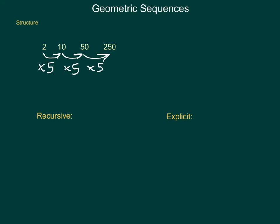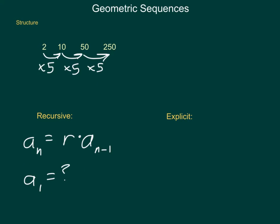Our notation is going to be very similar to what we had before. We're going to have our recursive formula — recursive meaning that in order to get the next term, we have to have the previous one. Our formula is: a sub n equals r times a sub n minus 1, and a sub n equals some starting value. The pieces: a sub n means the term we're looking for, a sub n minus 1 is the previous term, and r is the common ratio — the number we're using to get from one term to the next. So, a sub n equals 5 times a sub n minus 1, where a sub 1 is 2. In other words, start at 2 and multiply by 5 as you go.